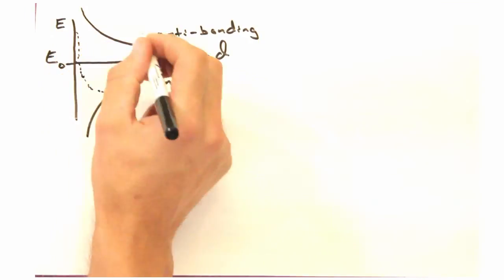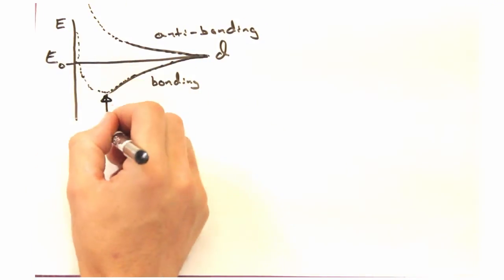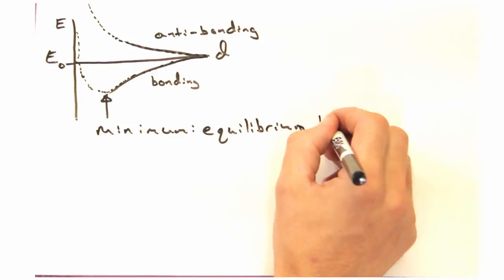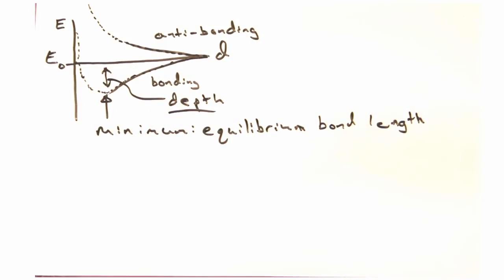If we include these effects, the electron energies increase substantially, and we get the following curve. Cool. It seems like there's a minimum on this bonding curve, suggesting that this is the equilibrium bond distance. Exactly, that's an important idea, and the depth of this well shows how stable the bond is. So basically the energetic penalty you'd have to pay if you pulled the two nuclei apart.